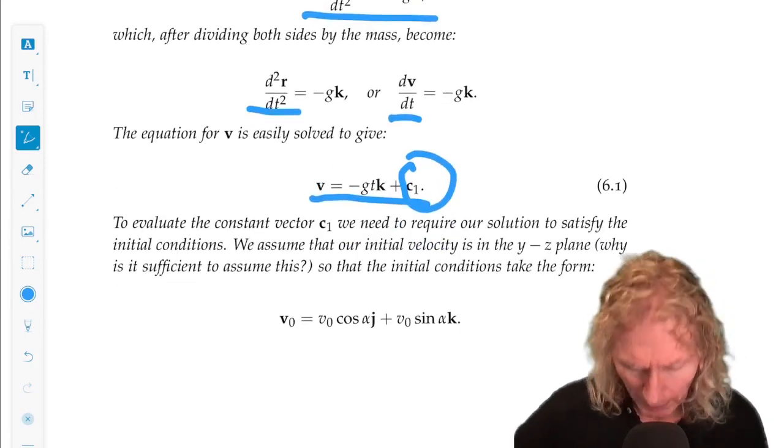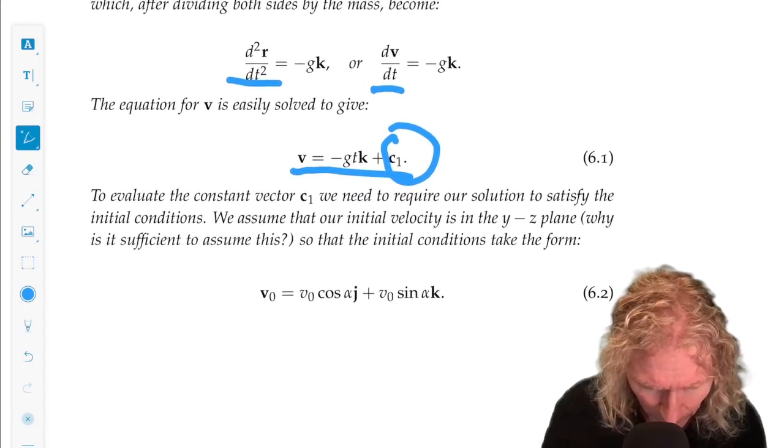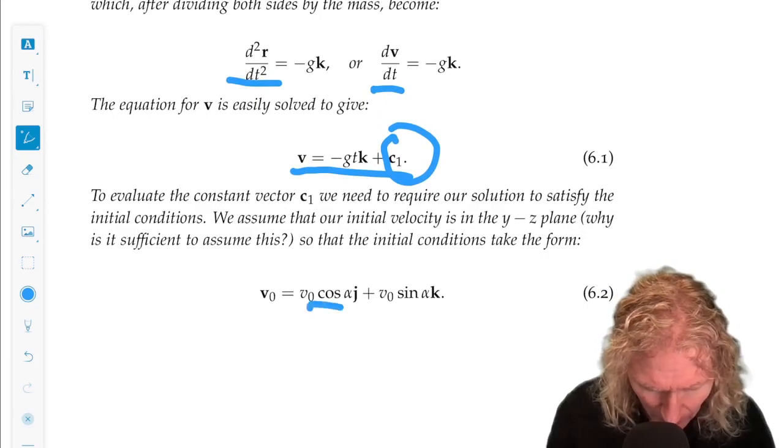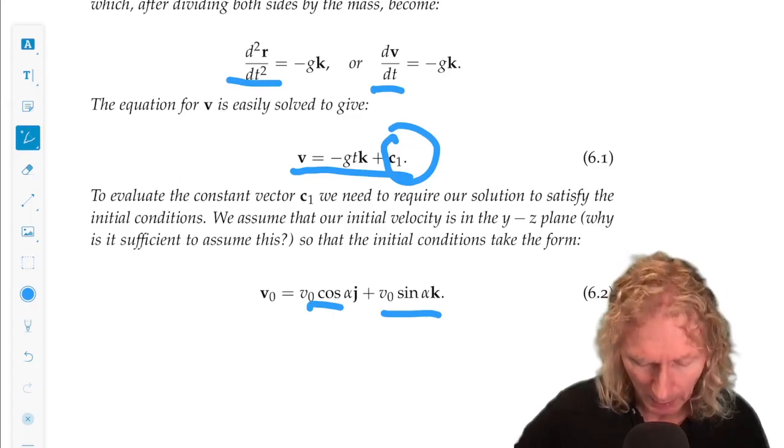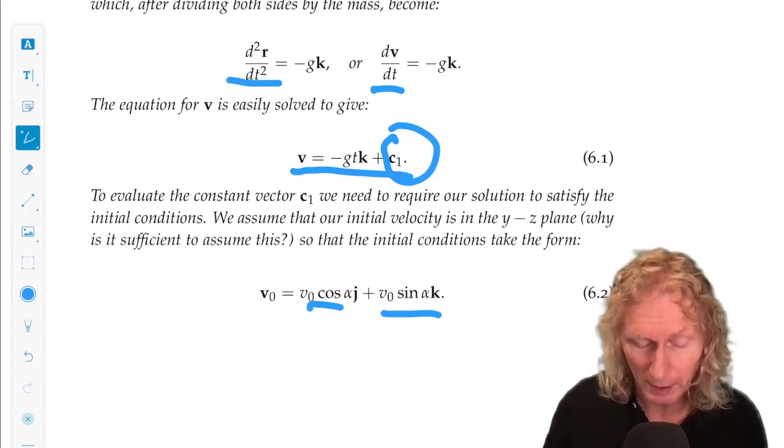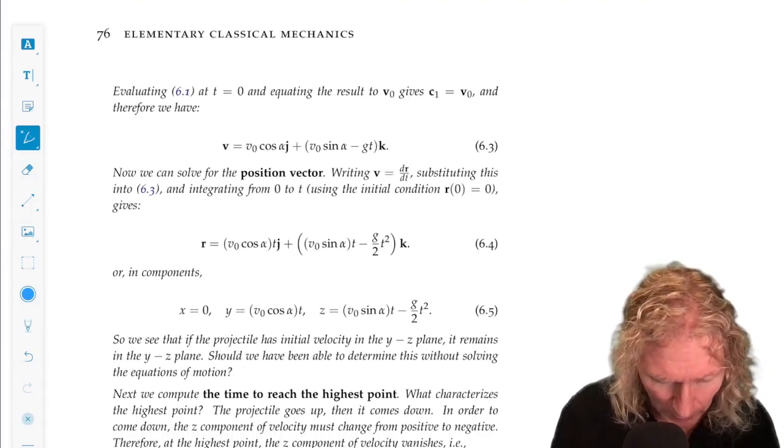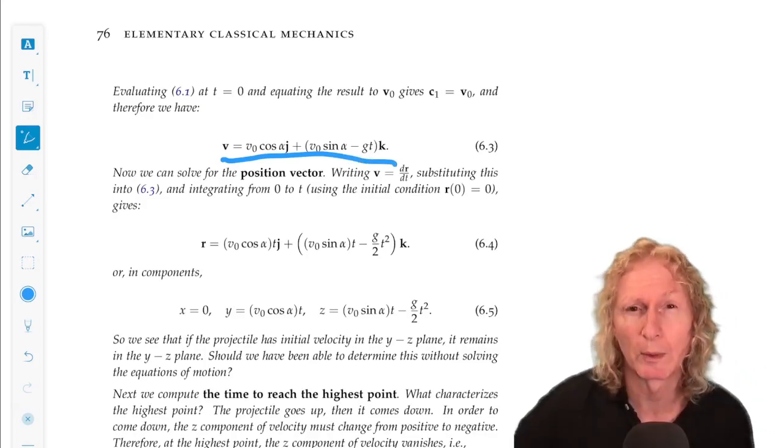We assume that t equals zero. We've been given the velocity. It's in the yz-plane. So v-naught cosine alpha j plus v-naught sine alpha k. We plug that into the equation to evaluate the vector constant. And this is what we get.